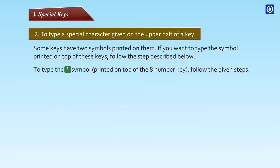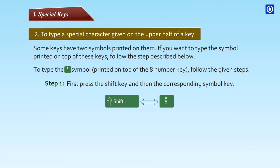To type the asterisk symbol printed on top of the eight number key, follow the given steps. Step one: First press the shift key and then the corresponding symbol key. Shift plus eight. The key produces the symbol asterisk.